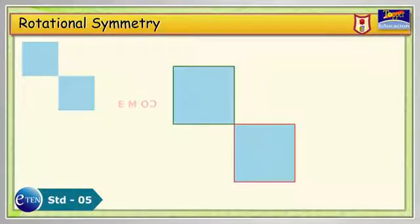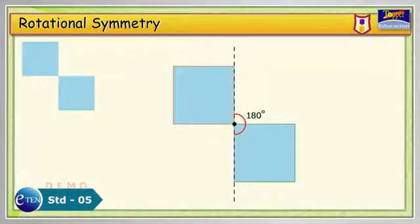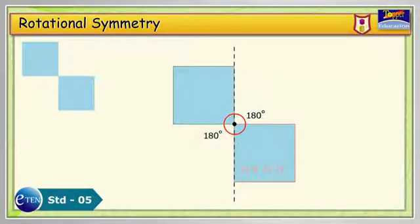If the pattern of two squares is rotated to 180 degrees, we get the same pattern. And if we again rotate 180 degrees, it brings back the original pattern.